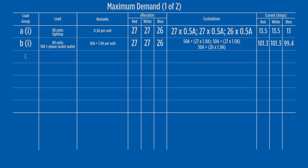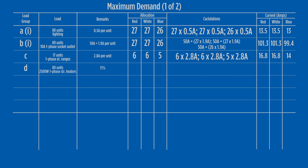In this example, only 17 units have cooking ranges. With six allocated to each of two phases, the calculation gives 2.8 amps per unit, with a total loading of 16.8 amps. Load group D covers fixed space heating, and the 27 strip heaters per phase fall into this grouping. The calculation of 75% of connected load gives a value of 220.7 amps.